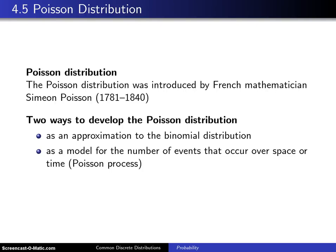Four models for discrete random variables that occur commonly in practice have been introduced so far. The first is the Bernoulli distribution, the second is the binomial distribution, the third is the geometric distribution and there are two different flavors of the geometric distribution, and the fourth is the negative binomial distribution and there are also two different flavors of the negative binomial distribution.